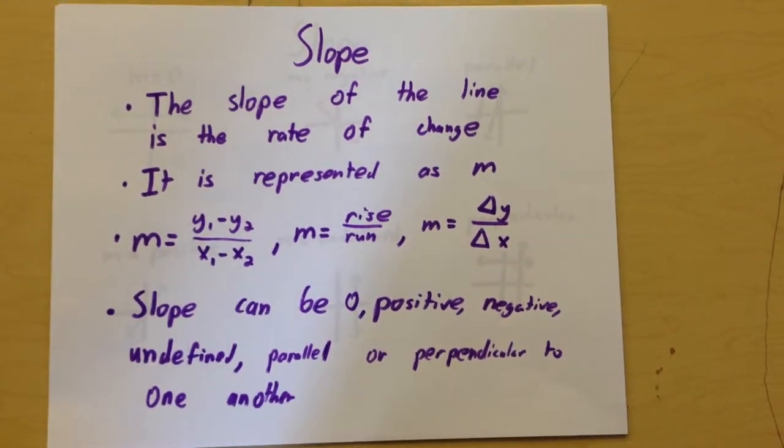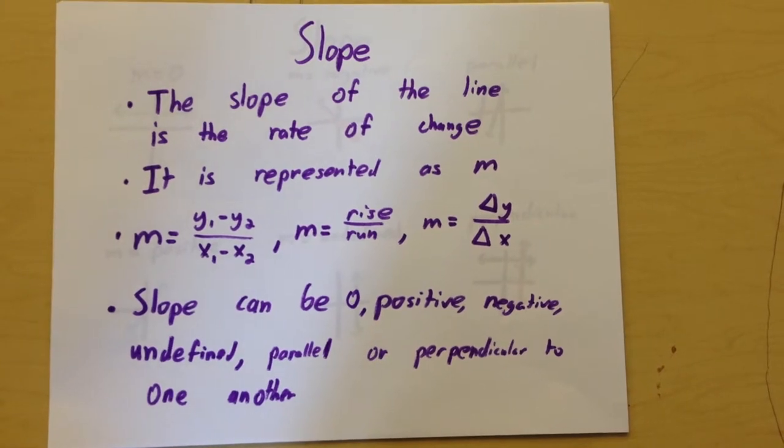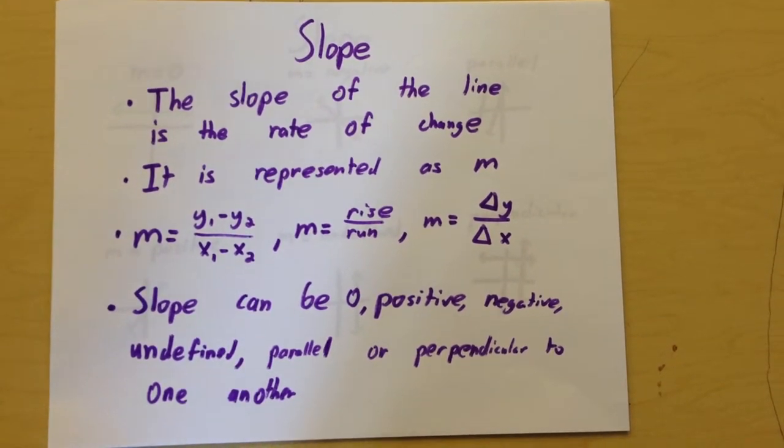Slope can be zero, positive, negative, undefined, parallel, or perpendicular to one another.